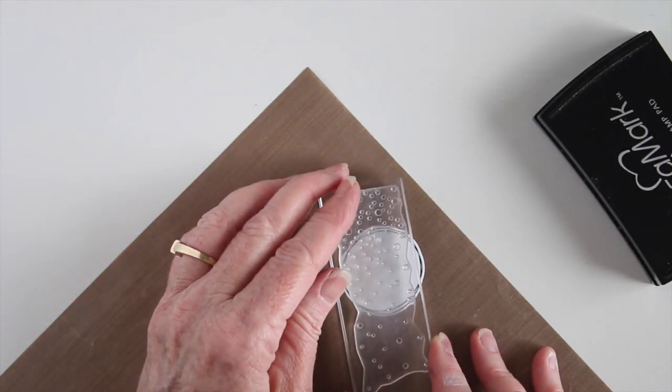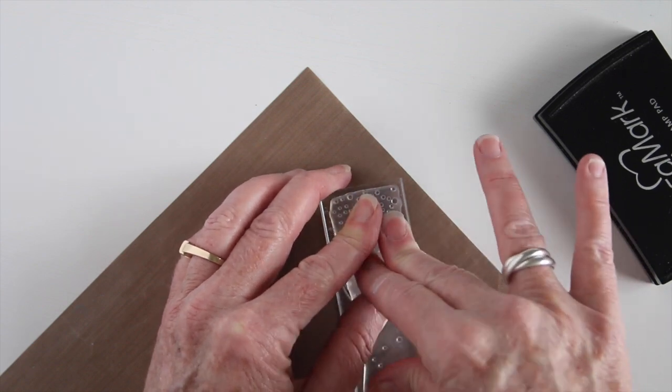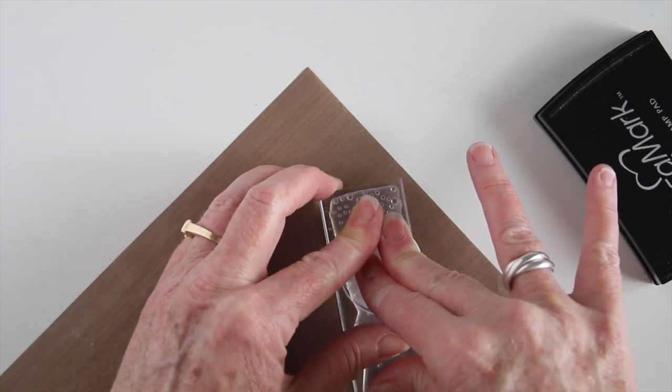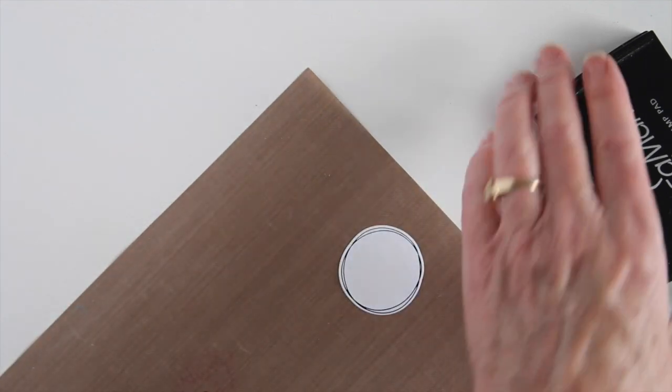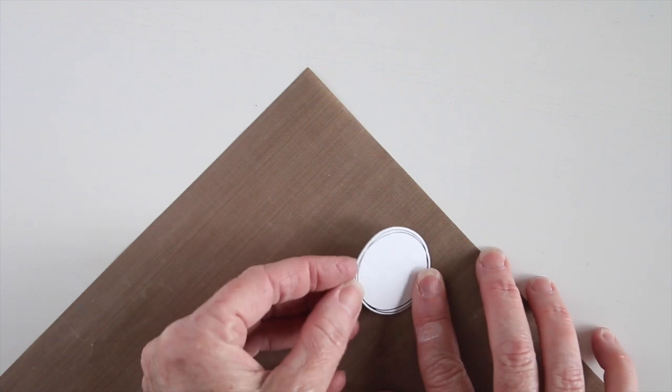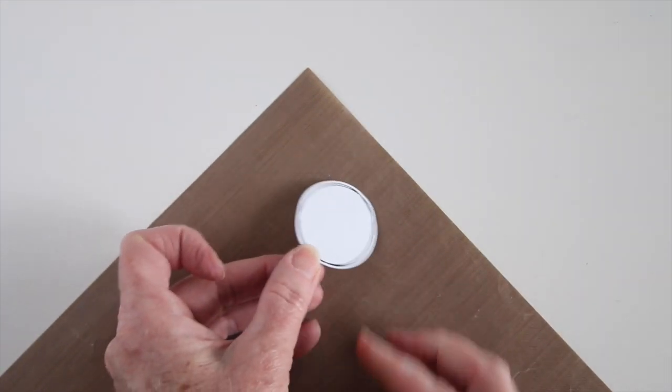So once you have that stamp inked up, go ahead and stamp onto your paper. And like I said, I'm using a coated paper. This doesn't really work on a Neenah-type paper. So either glossy or the Ranger's stamping paper. Now I want this to dry completely before I go to add ink on top.